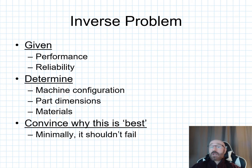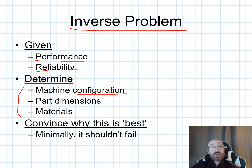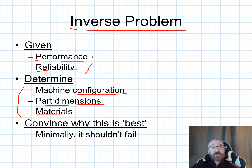In contrast, an inverse problem gives us the desired performance or reliability, and we need to determine the machine configuration, parts, dimensions, and materials in order to achieve that desired performance and reliability. We need to convince why our solution is best, and minimally, it shouldn't fail.